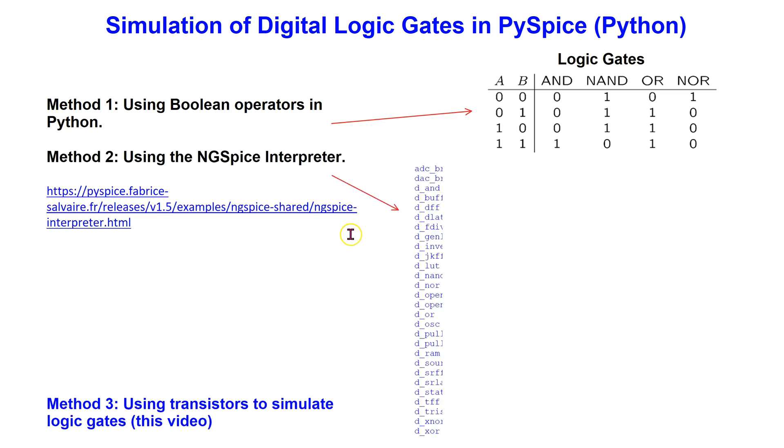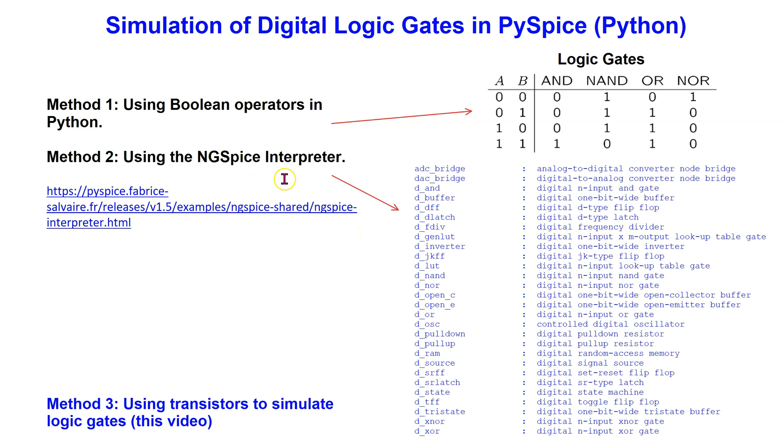The second method is to use the NG Spice interpreter. This method is illustrated in one of the built-in examples in PySpice. This method allows access to all the digital circuit elements in NG Spice, including the digital logic gates.